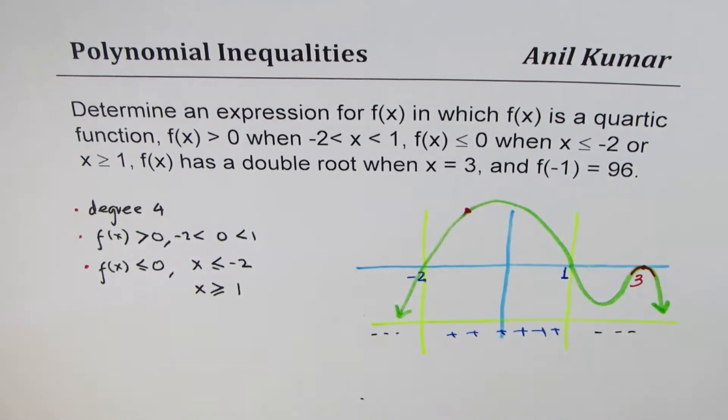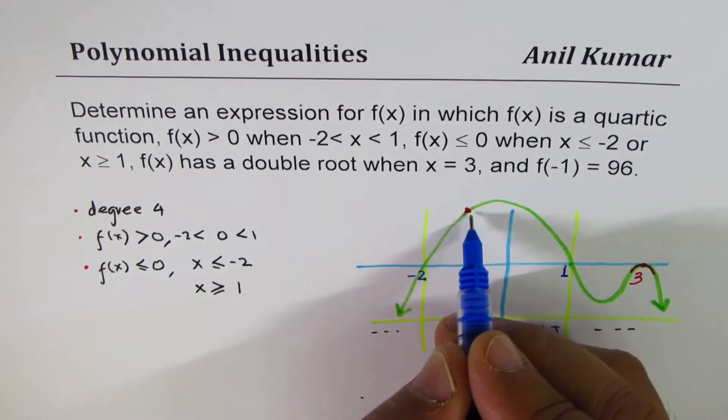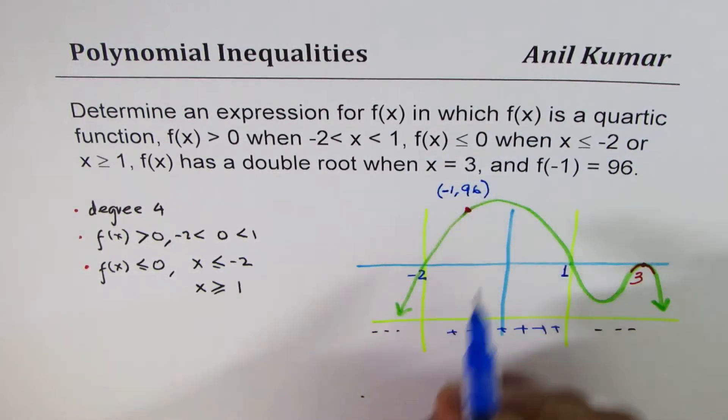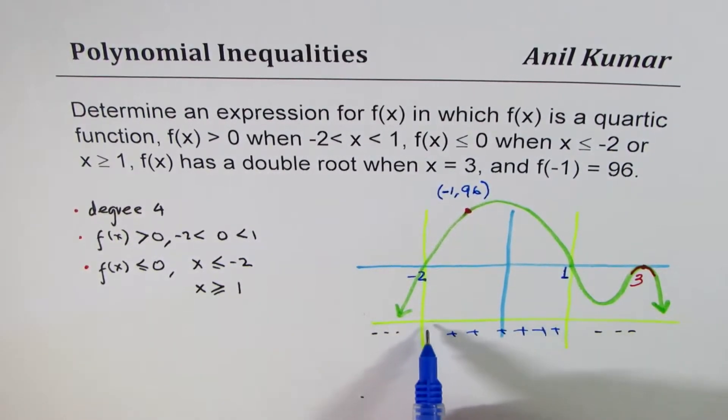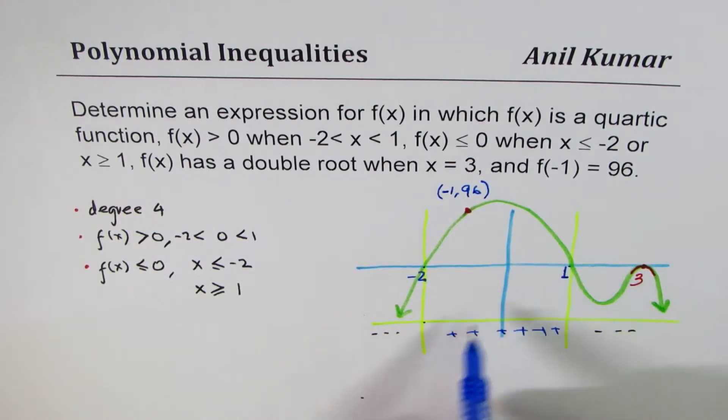Makes sense, right? And we have a turning point at x equals to 3. We have this point in place which is minus 1, 96. And we have satisfied this condition of being positive between minus 2 and 1 and negative elsewhere or 0. Is it okay?